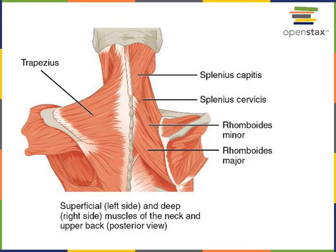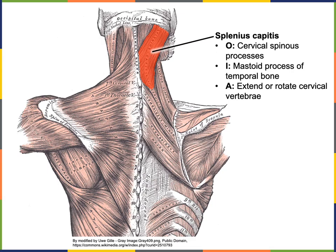Here with a posterior view we can see the splenius muscle group: splenius capitis and splenius cervicis. Together these muscles have the action of extending the cervical vertebrae to extend the head at the neck. Splenius capitis has its origin from the spinous processes of cervical vertebrae and inserts onto the temporal bone at the mastoid process. When both the right and left splenius contract they extend the cervical vertebrae, or if only one side contracts — such as splenius capitis on the right — it rotates the head to that side.